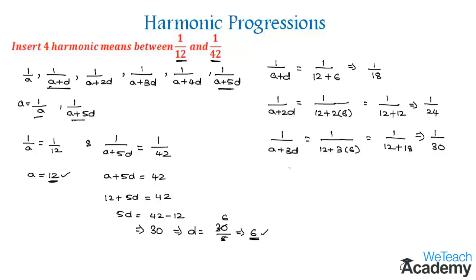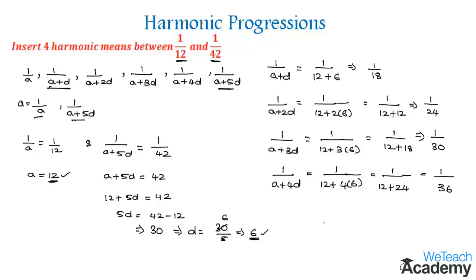The next term is 1/(a+4d). Substituting gives 1/(12 + 4×6) = 1/(12+24) = 1/36. So the four harmonic means are 1/18, 1/24, 1/30, and 1/36.